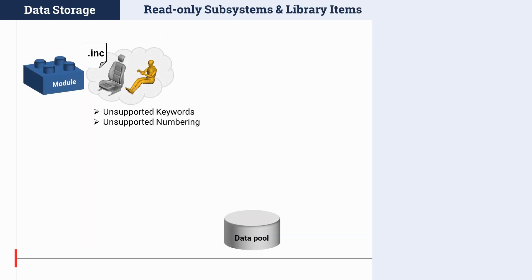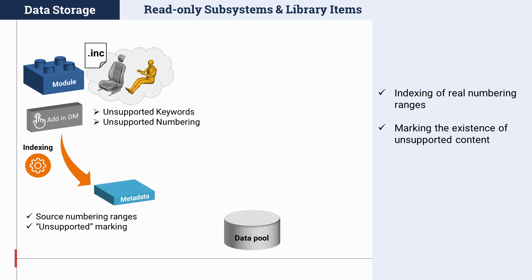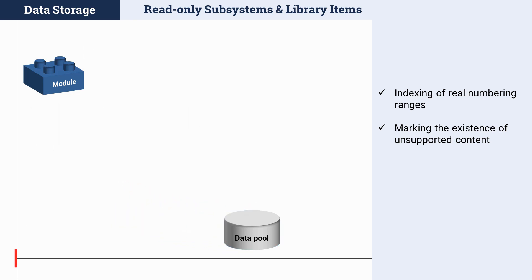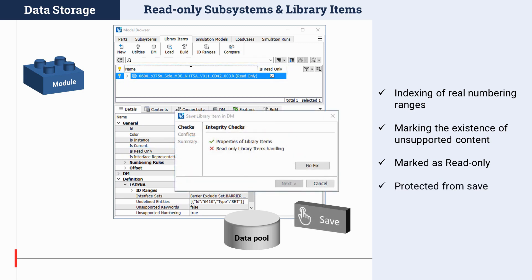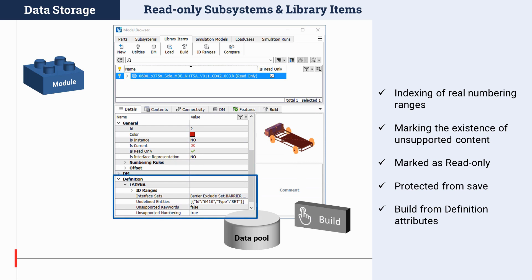Substantial development was carried out in the area of data storage that now allows marking of subsystems and library items as read-only, indicating that their files should be treated as black boxes during build and save operations. This makes it possible to use modules with unsupported keywords or unsupported numbering in the modular environment. The indexing process has been enhanced to also extract real numbering ranges and mark unsupported content, with new definition attributes added to hold this information as metadata in DM. When a base module with unsupported content is loaded from DM, it is marked as read-only, protecting it from save both during explicit saves and silent save operations on higher-level model browser containers.